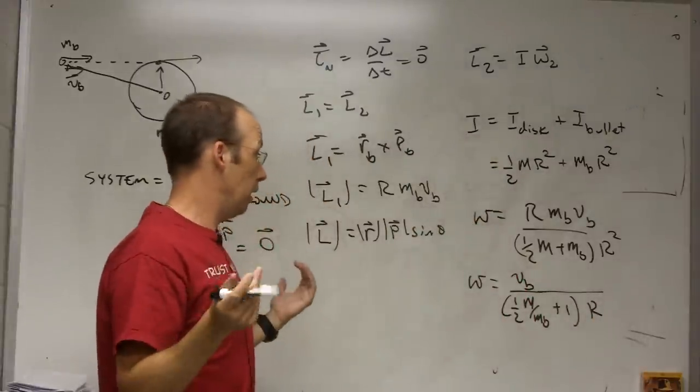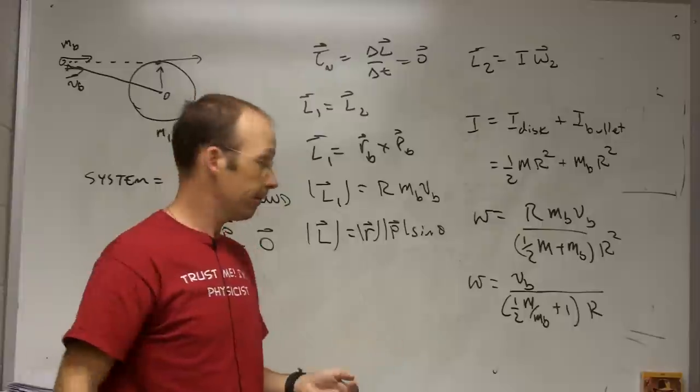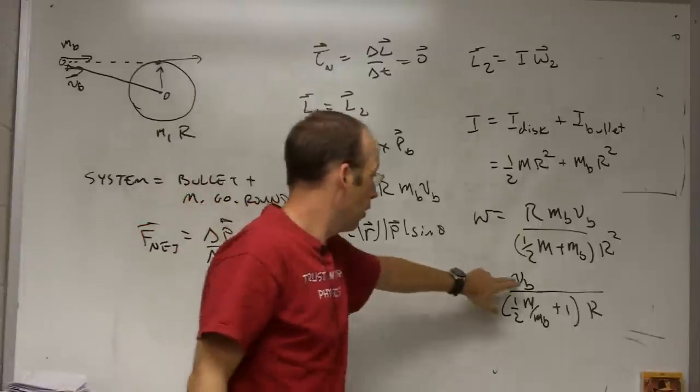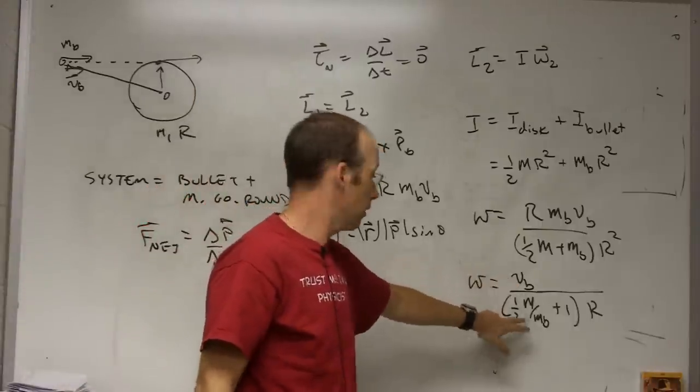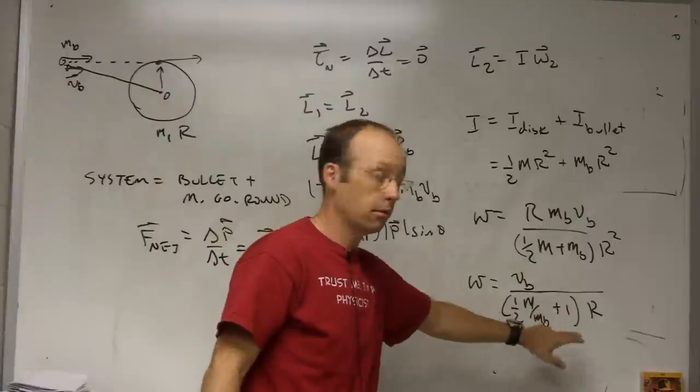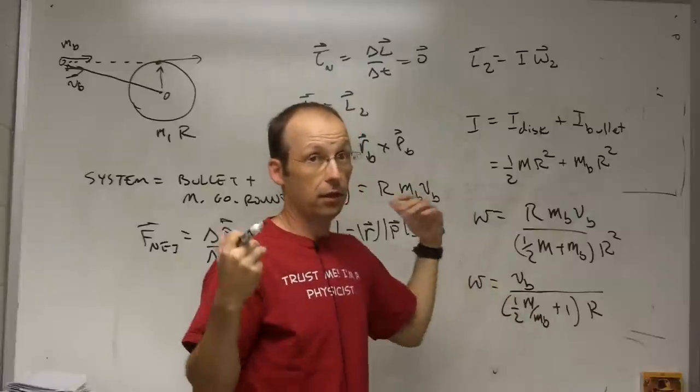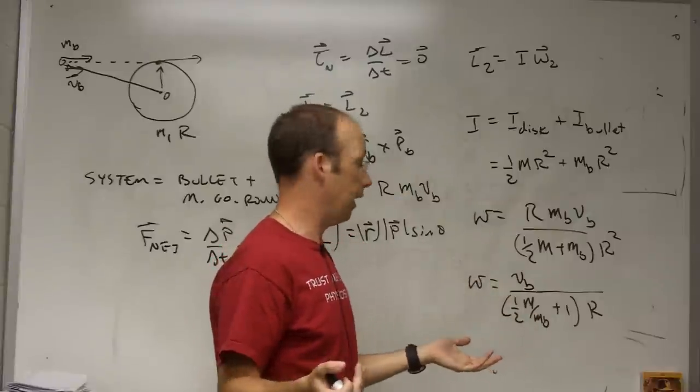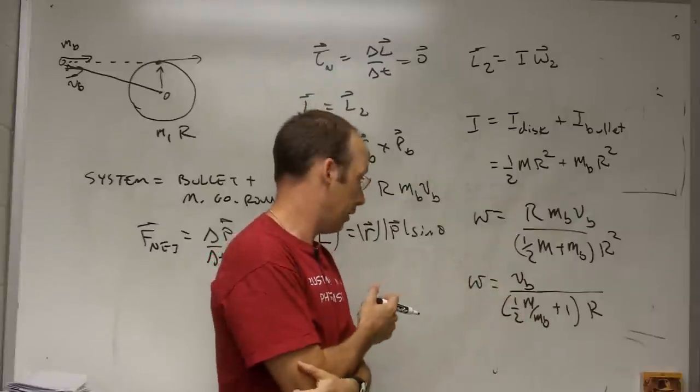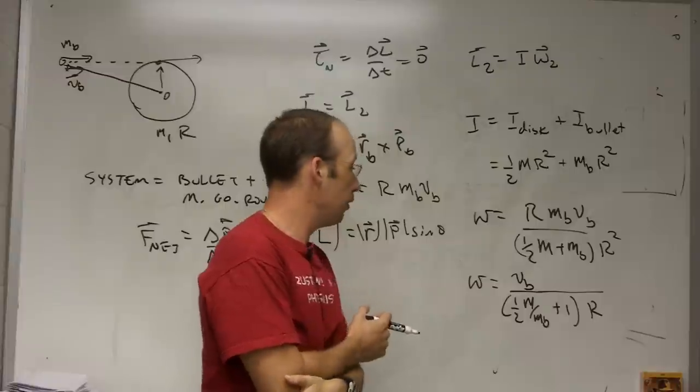Now we should check some things, because we don't want to just not check things. Does this have the right units? Well this is in meters per second. No units, no units. Divided by R. So I get one over seconds which is the unit for angular speed and radians per second. That's the same thing.